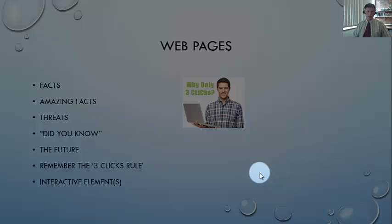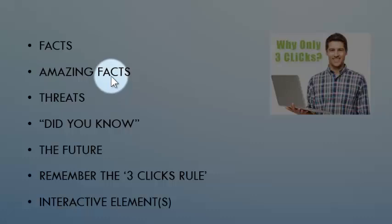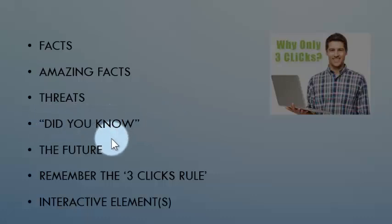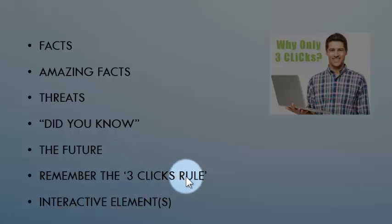On your webpage, there's a suggested number of pages you could have. For example, facts about your biome, one covering the impacts or dangers to that biome which ties in with the threats, a 'did you know' amazing facts section, and a future section — remember, what are some of the solutions to use this biome sustainably? Remember the three-clicks rule, which basically says you don't want to go more than three clicks down to get information, so it's got to be easily accessible.